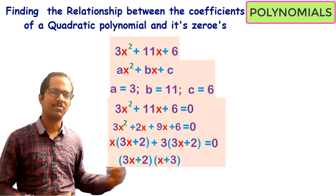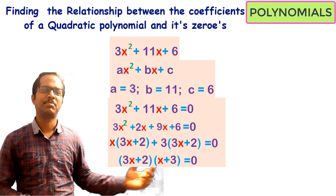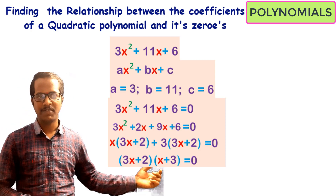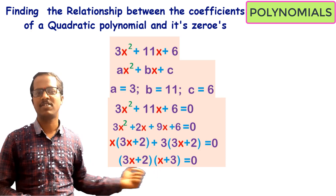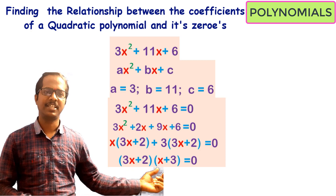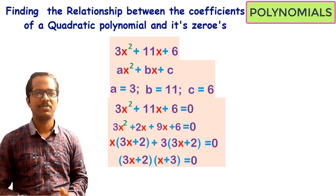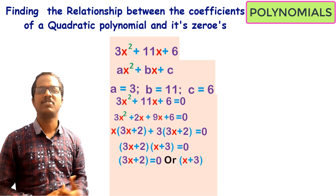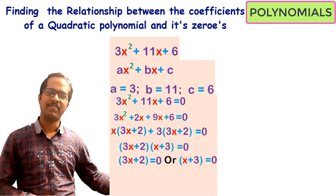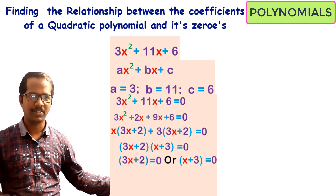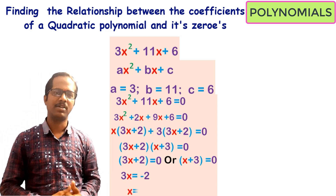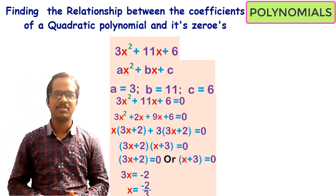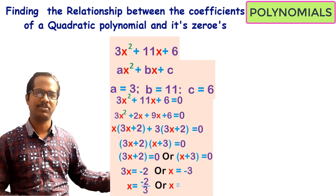Taking (3x + 2) as common gives (3x + 2)(x + 3) = 0. Since the product equals zero, either one of the linear factors must equal zero. So we take 3x + 2 = 0 or x + 3 = 0. Simplifying gives x = -2/3 or x = -3.